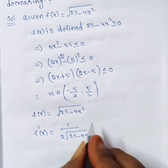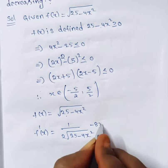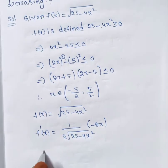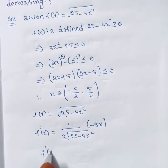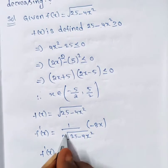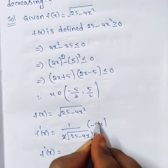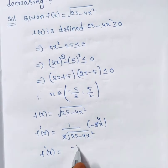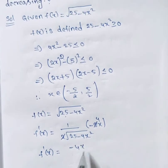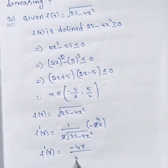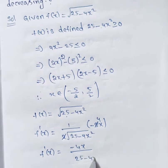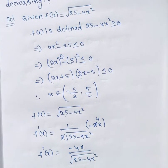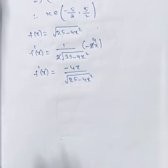So the inner derivative is −8x. After simplification and cancellation, f'(x) = −4x / √(25 − 4x²).